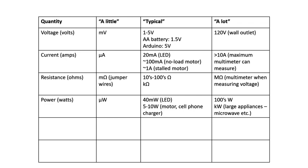For power — voltage times current — typical values could be in the watts range when talking about motors or something like a cell phone charger. A typical cell phone charger running off USB is 5 volts taking at least an amp; newer fast chargers for a tablet are more like 2 amps, so you're looking at 5 to 10 watts. Regular LED light bulbs are usually about 10 watts. For smaller things like an LED, if you calculate P equals IV, you're going to get more in the milliwatt range. So depending on what you're measuring, we could see power from milliwatts up to a few watts.